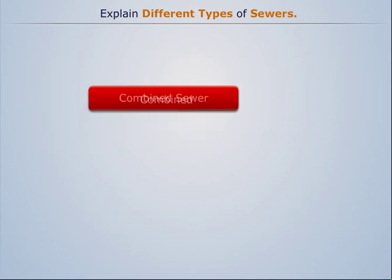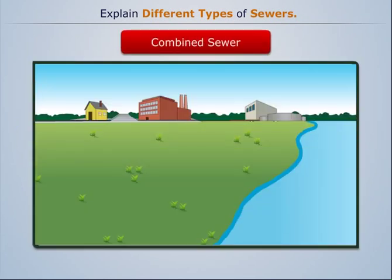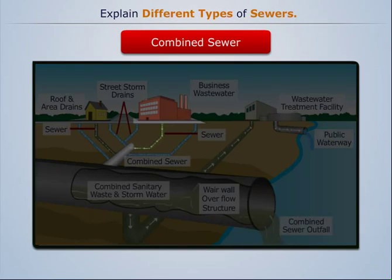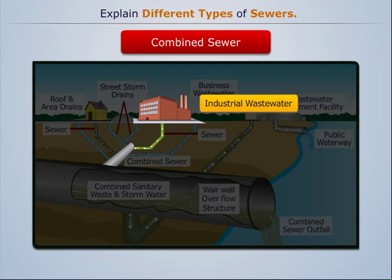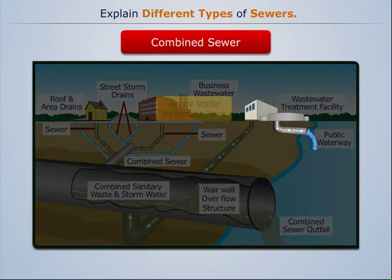Combined sewers are large networks of underground pipes that convey domestic sewage, industrial wastewater, and storm water runoff in the same pipe to a centralized treatment facility. This transports the wastewater to a treatment plant where it is treated and discharged to a water body.